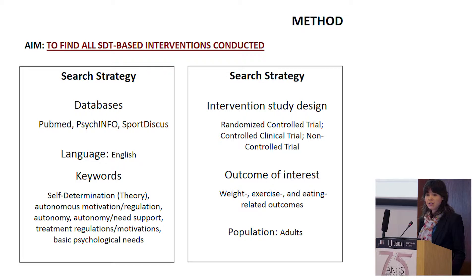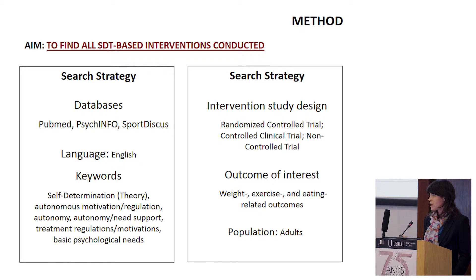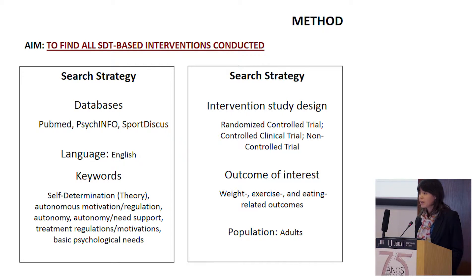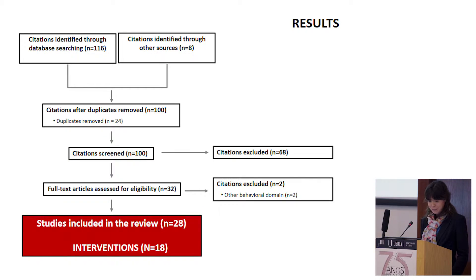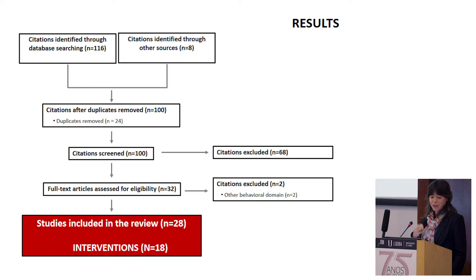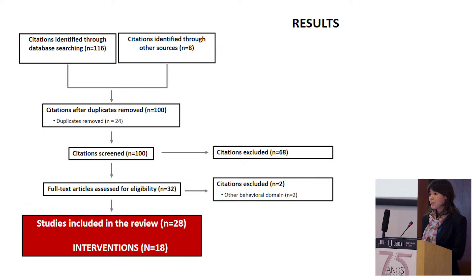We conducted a systematic, comprehensive search of peer-reviewed studies in several electronic databases and key scientific journals. Studies were included if they reported on SDT interventions conducted with adults, and that measured at least one of the outcomes of interest. There were no restrictions with respect to study design, type of comparison condition, format, length of intervention, and targeted population. We came up with 28 studies reporting on 18 unique interventions. This review was done April last year, so it's probable that more studies have been published since then. We will update this review soon.